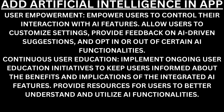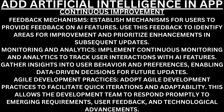Continuous user education. Implement ongoing user education initiatives to keep users informed about the benefits and implications of the integrated AI features — provide resources for users to better understand and utilize AI functionalities. Continuous improvement. Feedback mechanisms. Establish mechanisms for users to provide feedback on AI features — use this feedback to identify areas for improvement and prioritize enhancements in subsequent updates. Monitoring and analytics. Implement continuous monitoring and analytics to track user interactions with AI features — gather insights into user behavior and preferences, enabling data-driven decisions for future updates.